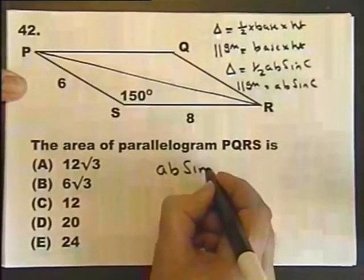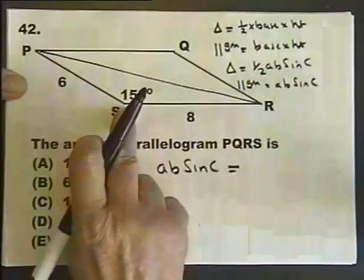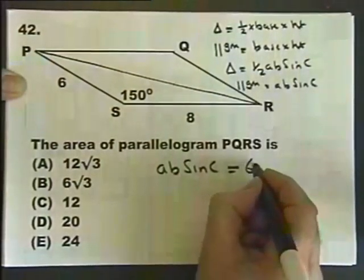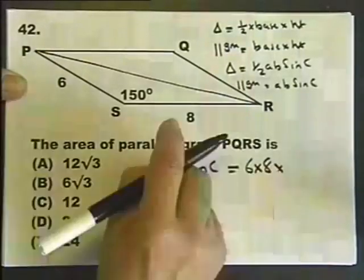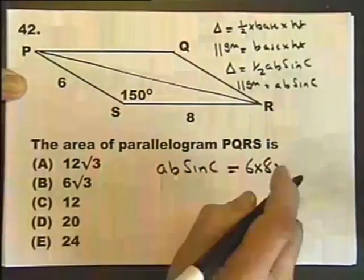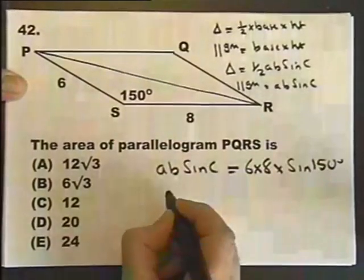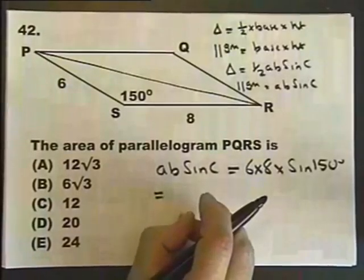AB is these two sides here. And the sine of the angle in between those two sides is what I'm talking about for that. So that works out the area of this parallelogram.